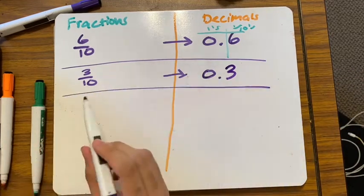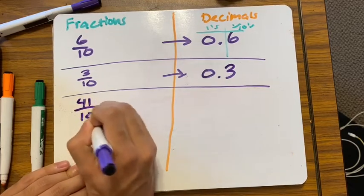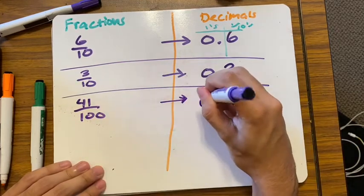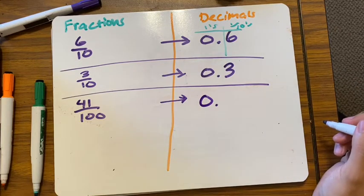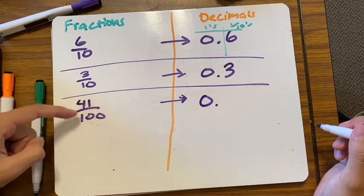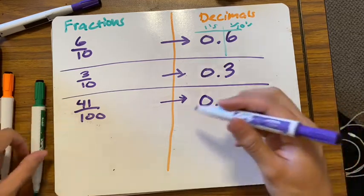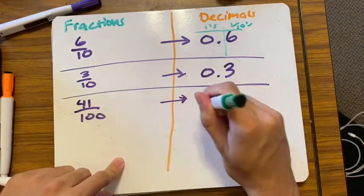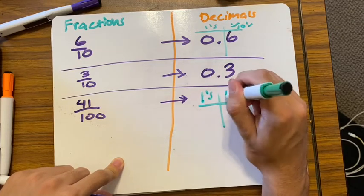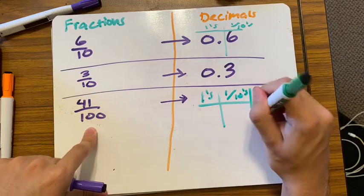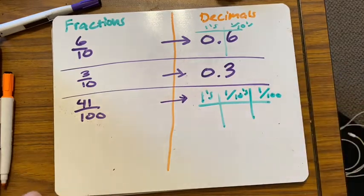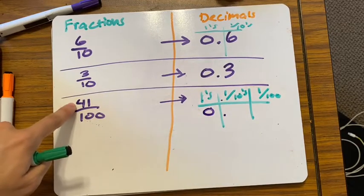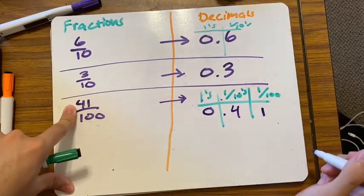Let's move on to hundredths. Let's say I have forty-one hundredths. First, do you have a whole number? No — it's a zero. Then you have 41 hundredths. Make a place value chart: ones, tenths, then hundredths. You have no whole number, so zero. Your number has to go all the way to the hundredths place.